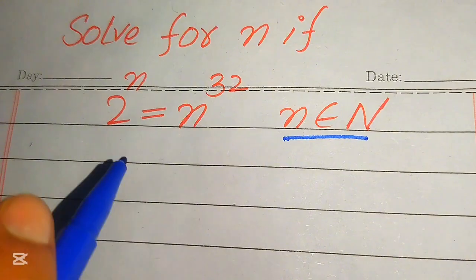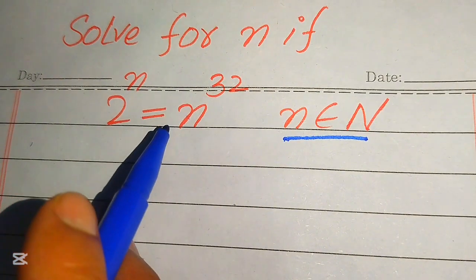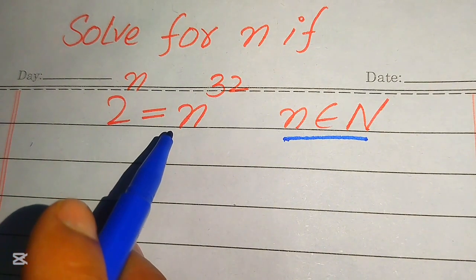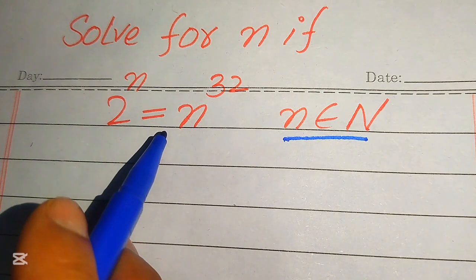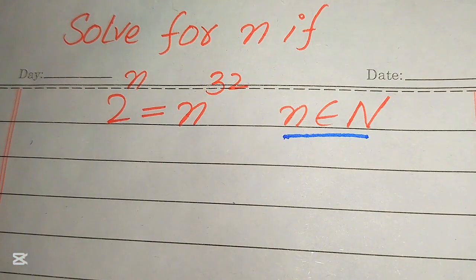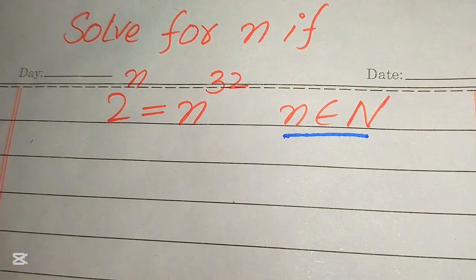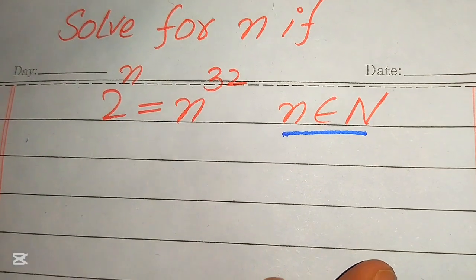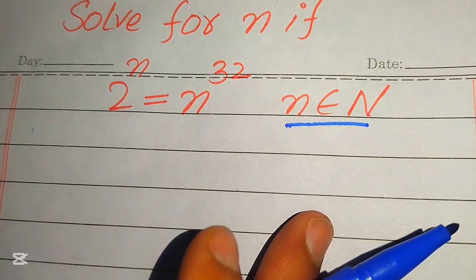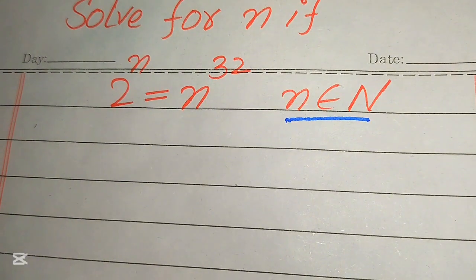In this problem we move our variable terms to the right hand side and the constant terms to the left hand side. I hope you like this method, but if you have any other method in mind, please don't hesitate to write it in the comment section. Now let's move forward and solve this problem for the values of n.